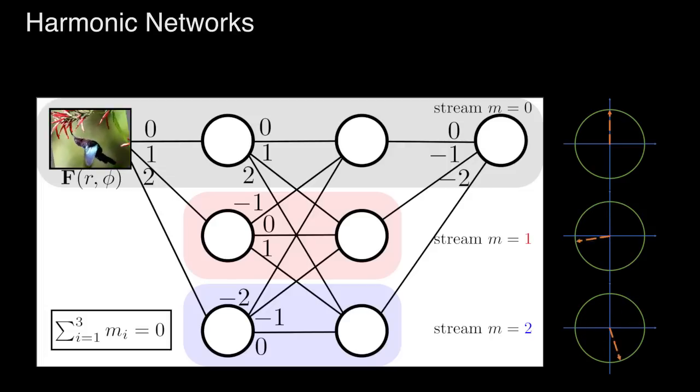At each layer these streams are able to share information allowing us to build very complicated rotationally equivariant deep features of far greater complexity than the circular harmonic alone.